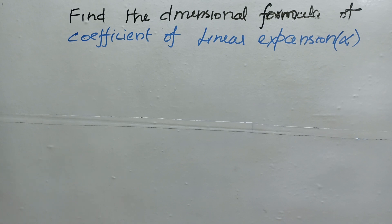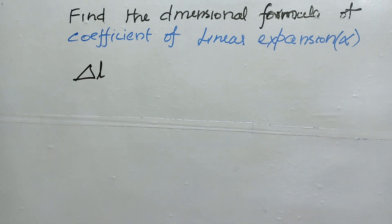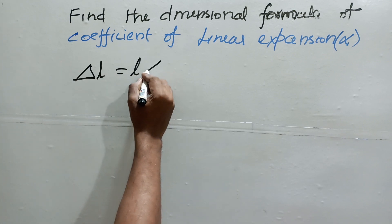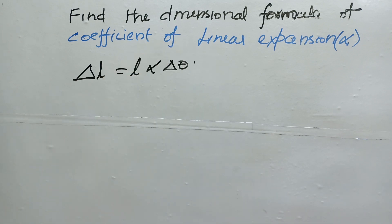First and foremost, let us understand its formula. According to the coefficient of linear expansion, the change in length due to heating — on supplying heat, length changes — the change in length is given by: ΔL = L·α·Δθ.